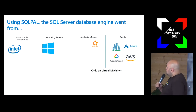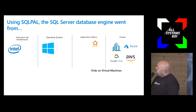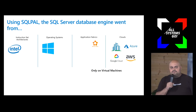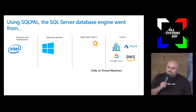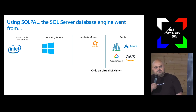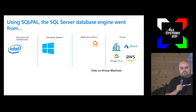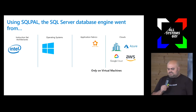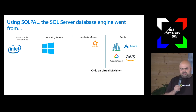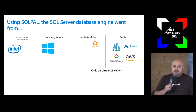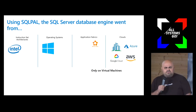This is kind of the state of the world in 2016. We only ran on Intel processors. We only ran on Windows. We only supported officially service fabric in Azure. And we could run on-prem and on clouds, but we could only do so on virtual machines.